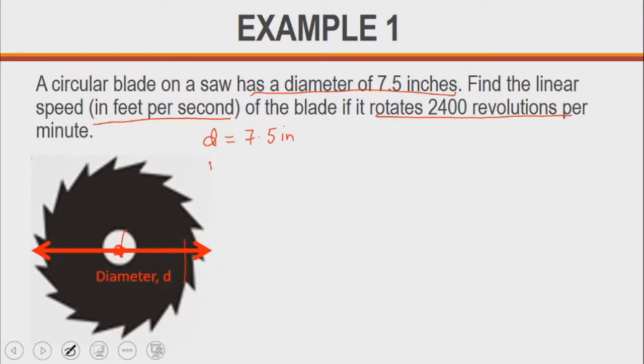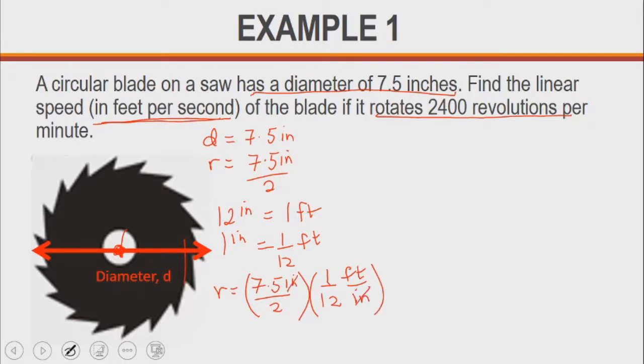We are given the diameter d to be 7.5 inches. If you divide diameter by 2, that will give us the radius, so the radius is 7.5 inches divided by 2. But before we use this particular radius, we might want to convert the inches to feet. 12 inches equals 1 foot, so 1 inch equals 1 over 12 feet. So the radius is going to be 7.5 inches divided by 2 multiplied by 1 over 12 feet per inch. Instead of simplifying right now, you can simplify everything later so you don't waste time.